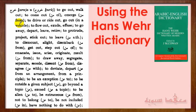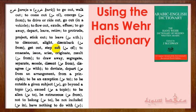خرج من can also mean to drive or ride out, to go out in a vehicle, to flow out, to extrude, to go away, depart, leave, retire, to protrude, project, stick out, or to leave. When من is followed by something — meaning an entity, not a living thing — it means to dismount from something, to alight, to disembark, to get out, to step out. For example: خرج محمد من السيارة — Muhammad stepped out of the car.